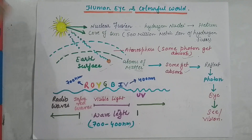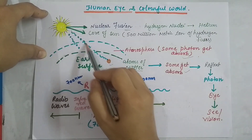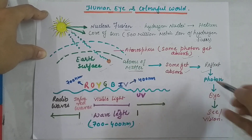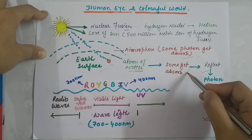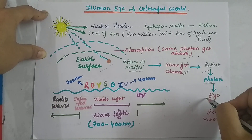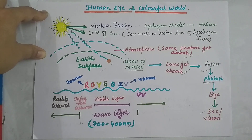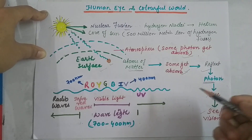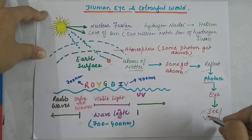If we think about ourselves — if there is no light present, then we are not able to see our own body. Whatever photons come from the sun, they get absorbed by the atoms of matter and some are reflected. The reflected light enters our eyes and we are able to see. This is how light gives the sensation of visibility.